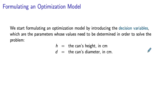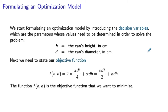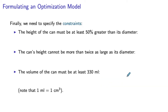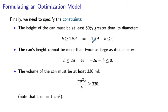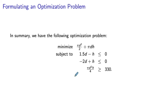To summarize: decision variables are h (can's height in centimeters) and d (can's diameter in centimeters). The objective function represents the surface area to minimize. The constraints are: h − 1.5d ≥ 0 (equivalently 1.5d − h ≤ 0), h − 2d ≤ 0, and pi*d²*h / 4 ≥ 330. As a result we obtain our complete model. We do not list non-negativity constraints because they turn out to be redundant for this model.